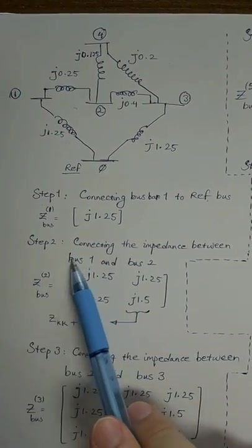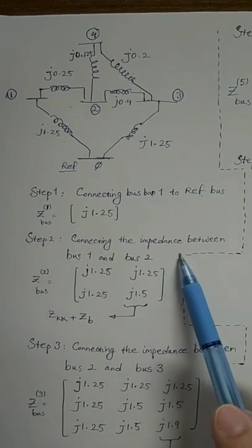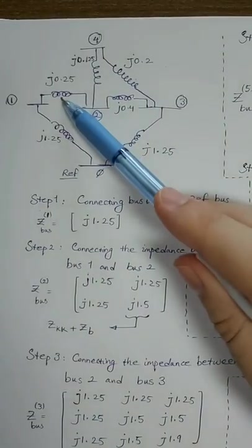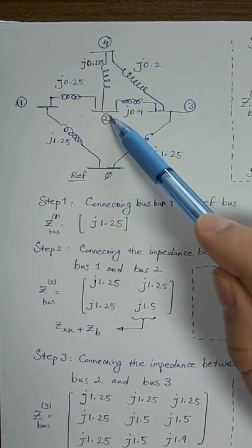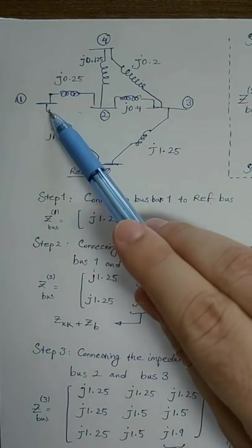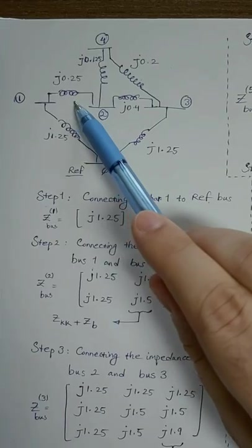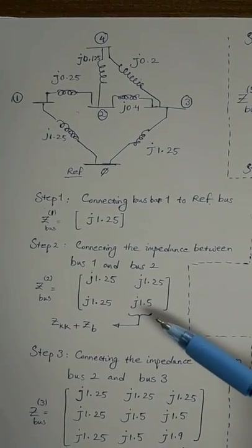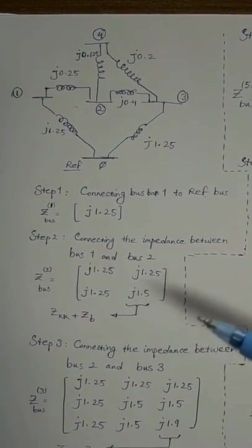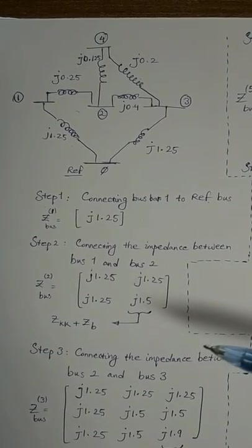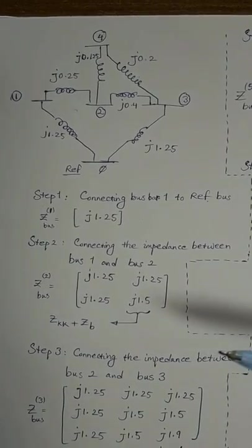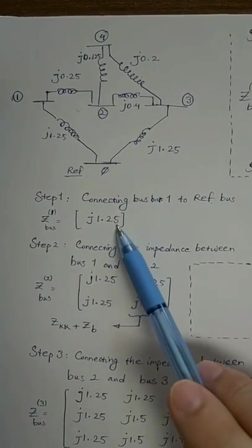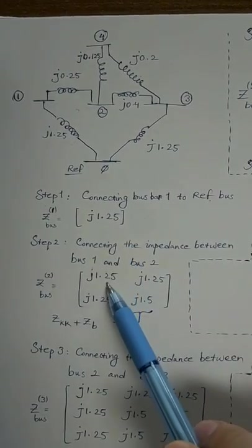In the second step, we are going forward and adding another impedance between a new bus bar — bus bar two — and an old bus bar, which is bus bar one. So I'm talking about J0.25. According to the instruction for this case, you have to put the original Z-bus matrix from the previous step, Z-bus one, repeated here.